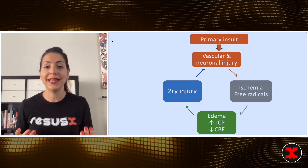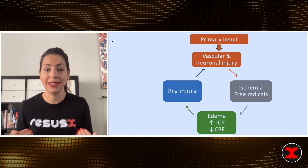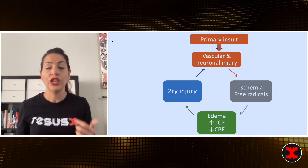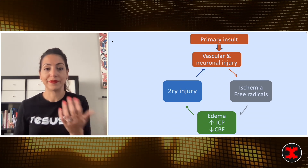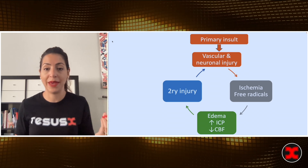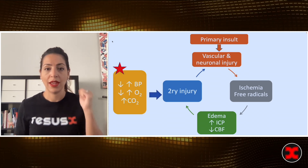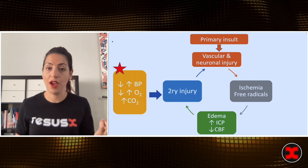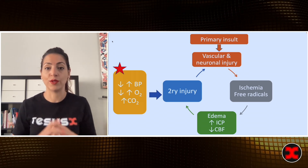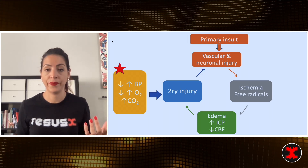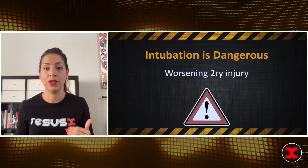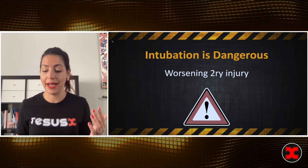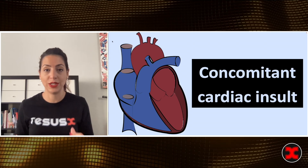Why are we talking about this? The reason is that secondary injury is something we can worsen, especially when we intubate or manage the patient around that time. This is the one thing we can actually affect and change to decrease this vicious cycle. Secondary injury includes things like seizures and edema, worsening injury — and we can cause it through increases or decreases in blood pressure, hypoxia, and hypercarbia. Those are things that can very easily happen around intubation. Intubation is dangerous because you can worsen that secondary injury, and these patients are more likely to have peri-intubation hypotension and bad outcomes, because many have concomitant cardiac injury in addition to their neuro injury.